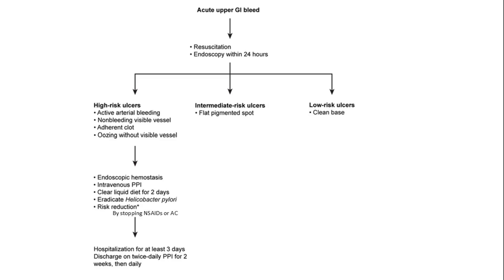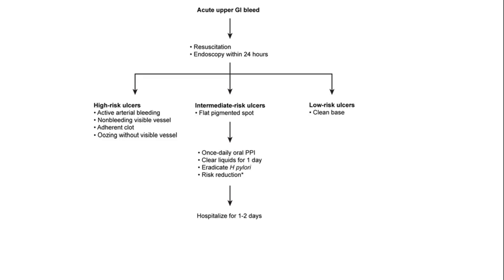Management of high-risk ulcers also includes intravenous PPI, clear liquid diet for two days, and testing and treating H. pylori. Patients with high-risk ulcers should be hospitalized for at least three days; upon discharge, they are prescribed twice-daily PPI for two weeks, then switched to daily dosing.